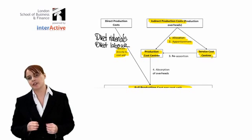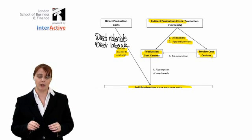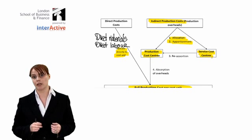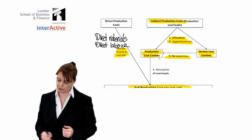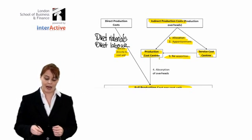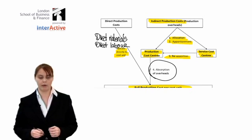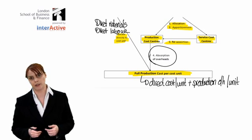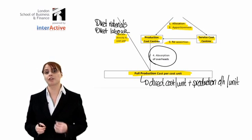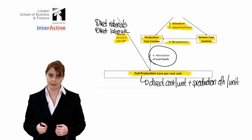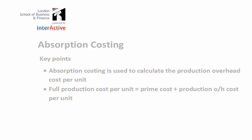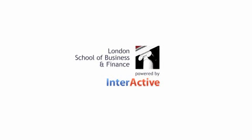Once we get to that point, we do have to move the costs between the service cost centers and the production cost centers, and that will be our step three: reapportionment. After that, we are going to find some way to absorb our overheads into our cost unit — in other words, calculate our production overhead cost per unit.